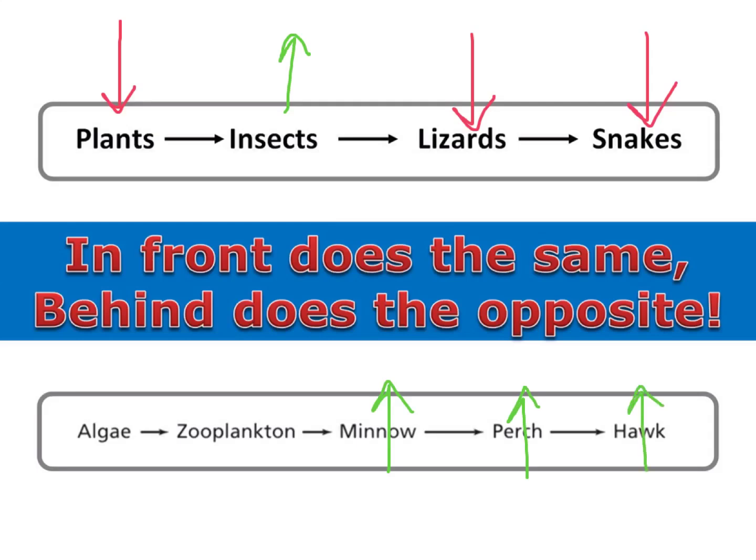But behind the minnows are the zooplankton, so they would do the opposite — that population would decrease, since more minnows are eating more zooplankton. But behind the zooplankton would do the opposite: since fewer zooplankton are there, they would eat less algae, allowing the algae population to grow.